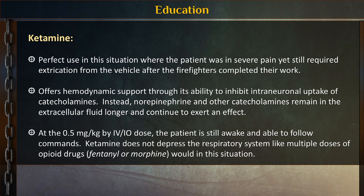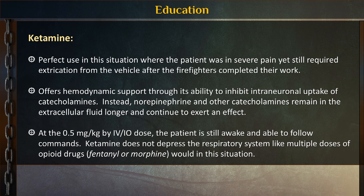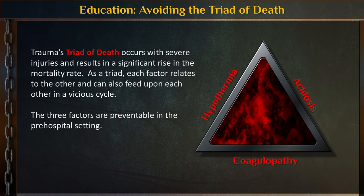For education: ketamine is perfect for this situation. At 0.5 mg/kg IV or IO, the patient should still be able to have a conversation with you, but you don't have to worry about blood pressure. Ketamine drives pressure up, peaking around the 10-minute window, then starts declining — offering hemodynamic support in trauma due to catecholamine reuptake inhibition. If both arms are trapped, IO is an option. Our dose is 0.5 mg/kg IV or IO. We want to avoid the triad of death: hypothermia, acidosis, and coagulopathy.